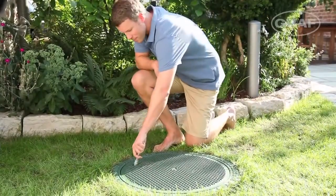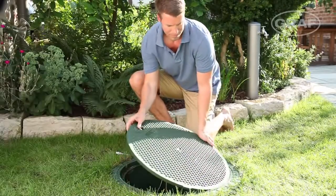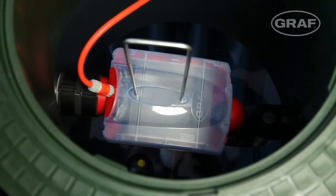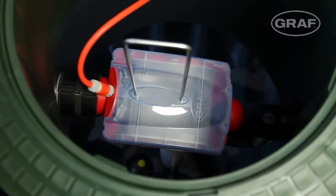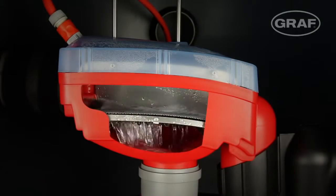Graf rainwater harvesting systems are designed so that only very few of the components need checking. The self-cleaning Graf OptiMax Pro filter is installed in the tank dome itself. It requires minimal maintenance.